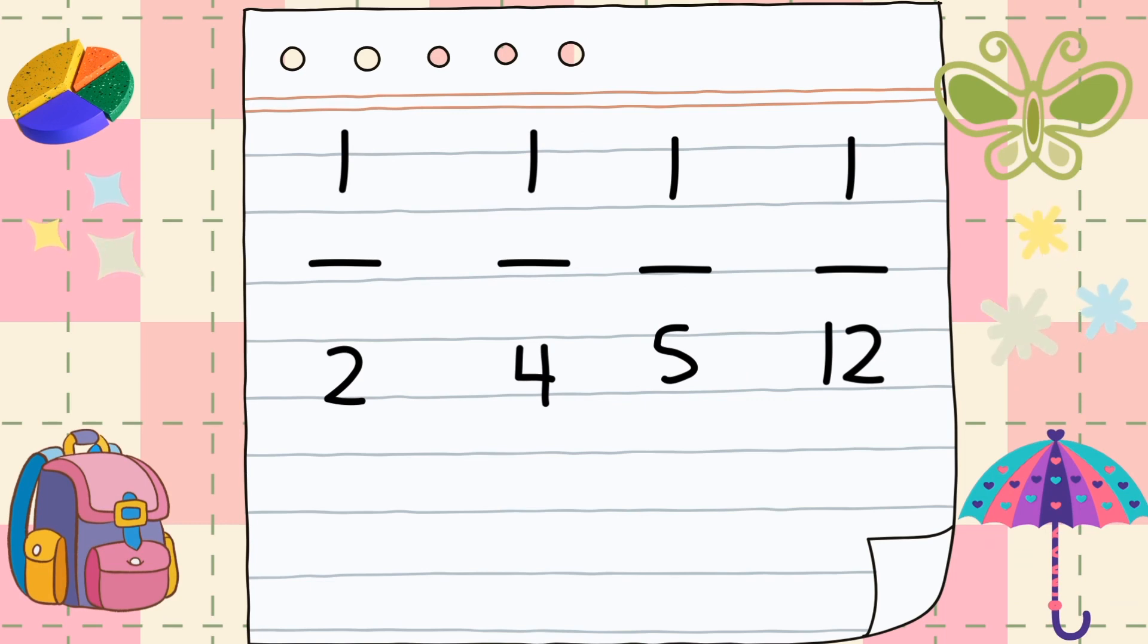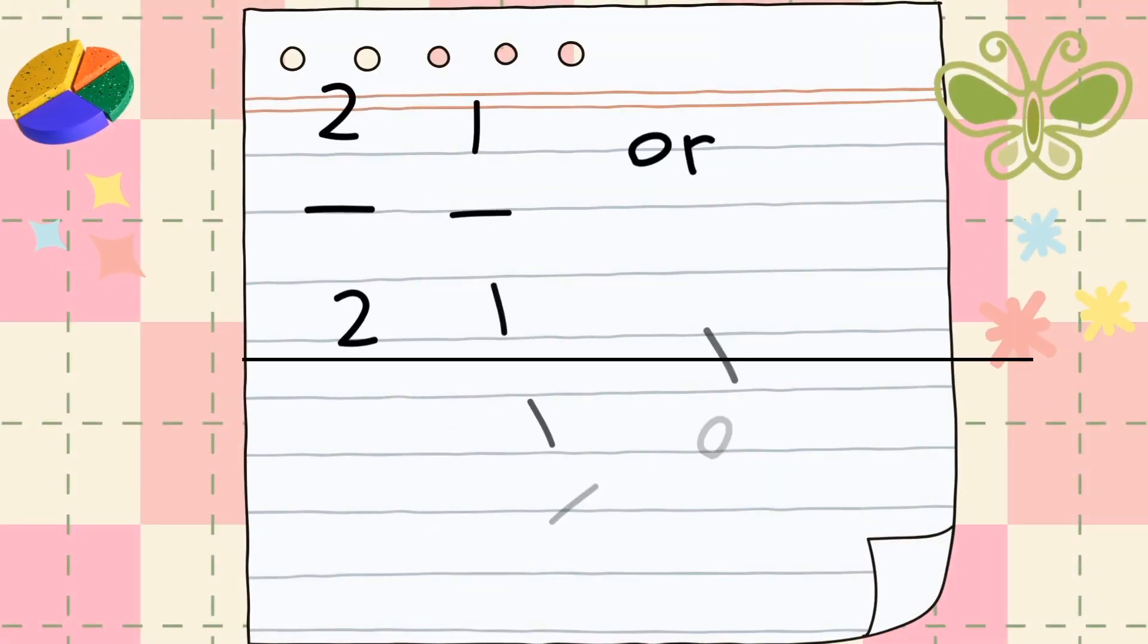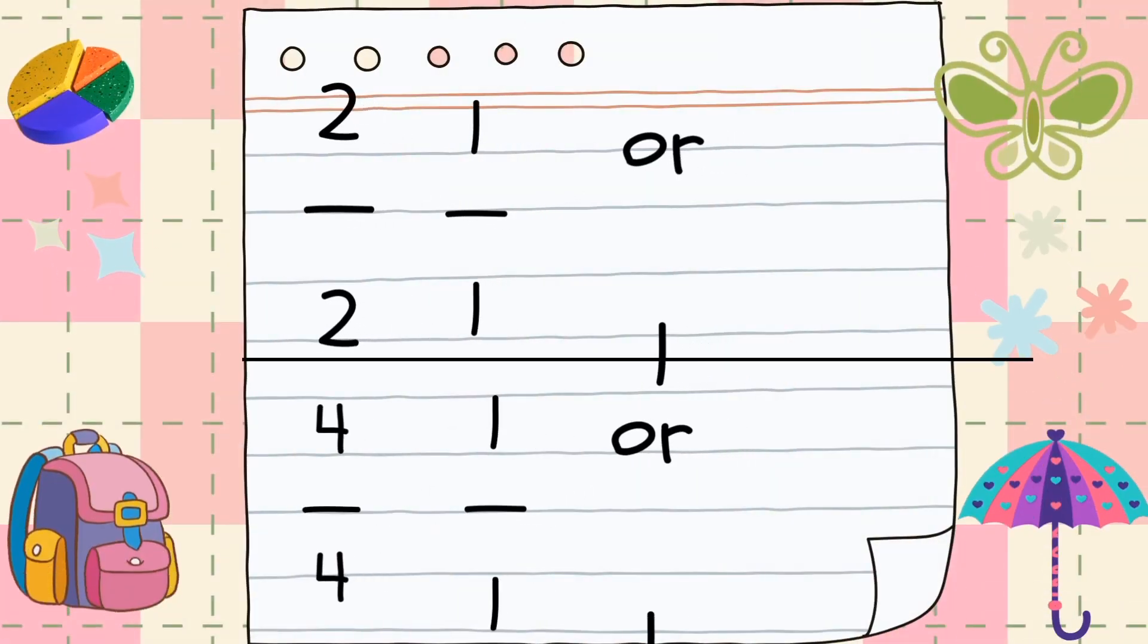Now these fractions cannot be simplified. See the top number, they're all ones. Nothing smaller than one. Here, if they're the same number like 2 over 2 or 4 over 4, it divides down to 1 over 1, which is 1.